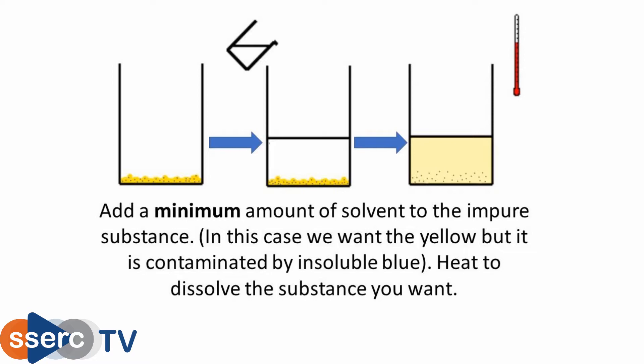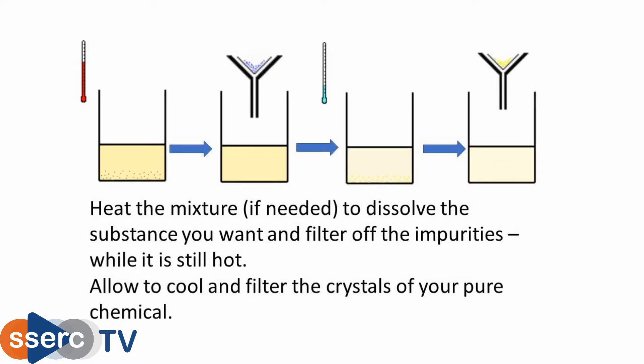The impure sample is dissolved in a small volume of solvent forming a saturated or supersaturated solution. As the temperature drops, crystals of the pure substance form while any impurities remain dissolved in the solvent.